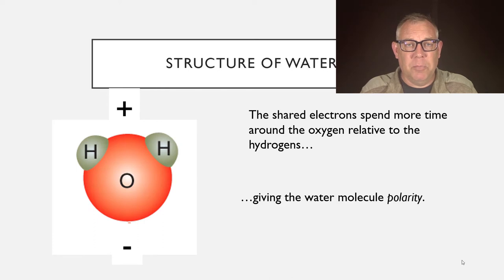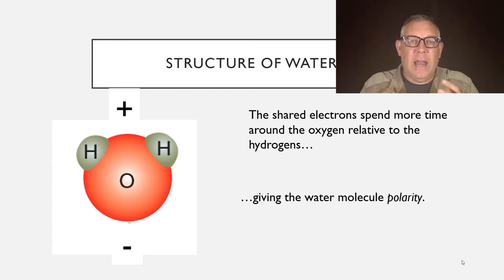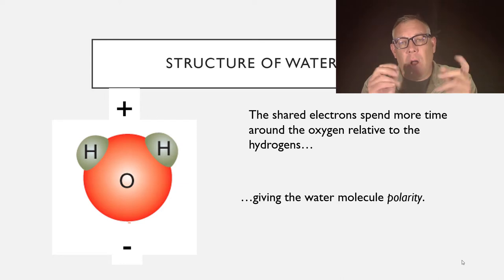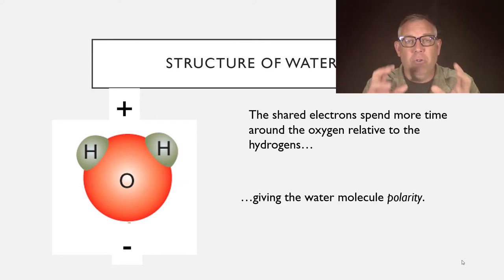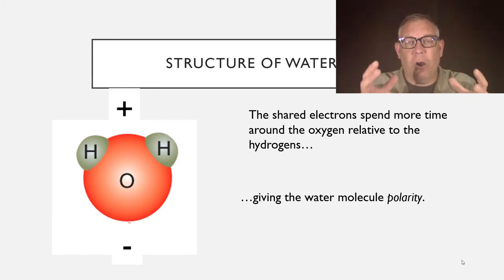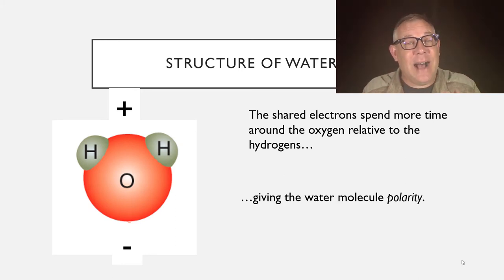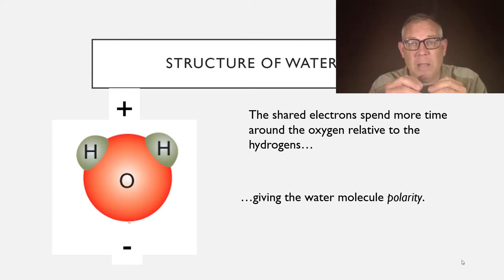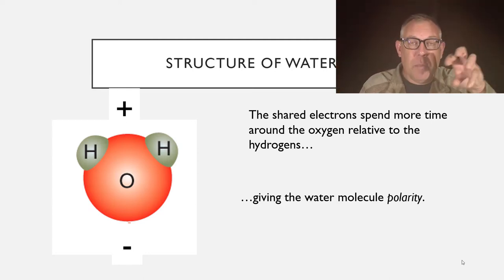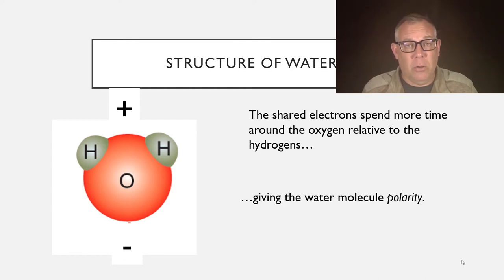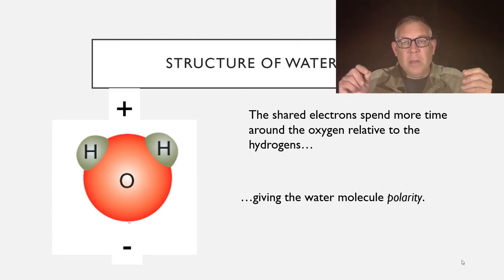What do we mean by a polar molecule? A polar molecule has separate charges — it has a positive end and a negative end. A non-polar molecule doesn't have any area with a particular charge. Now all atoms and molecules are overall neutral — the overall charge on water is neutral, it's not an ion — but within the molecule you've got a more positive area and a more negative area. That is a polar molecule, and water is a polar molecule.